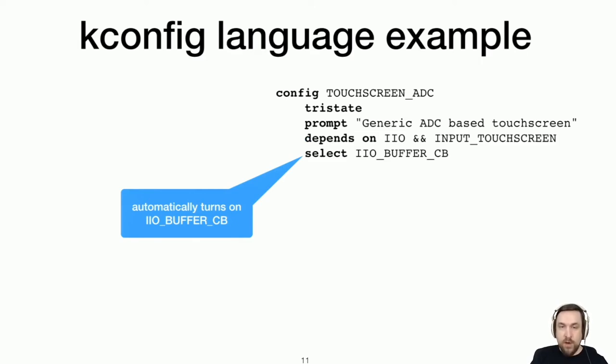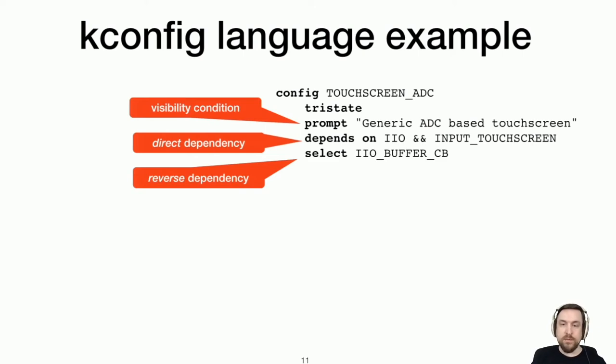And conversely, turning on touchscreen ADC can force other options to be on. So if touchscreen ADC is turned on, this IIO buffer CB is just automatically turned on. And this is useful for defining, say, configuration sets for a particular architecture or a particular chip. And all three of these aspects of the language actually work together to define the constraints on this option. Even the prompt itself defines some differences in behavior on how this configuration option is treated, because you can have invisible configuration options that the user is not allowed to select, but get automatically selected by the select construct.